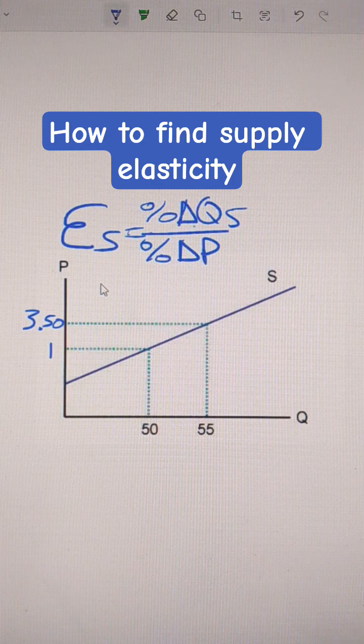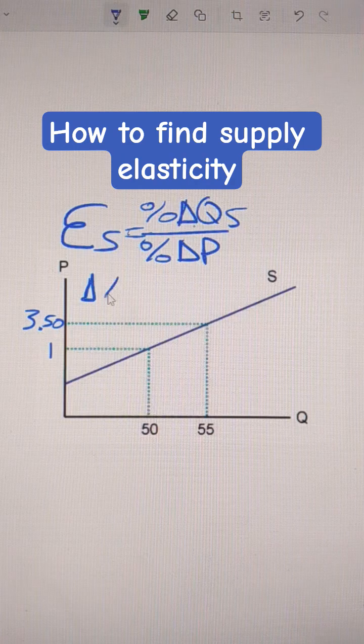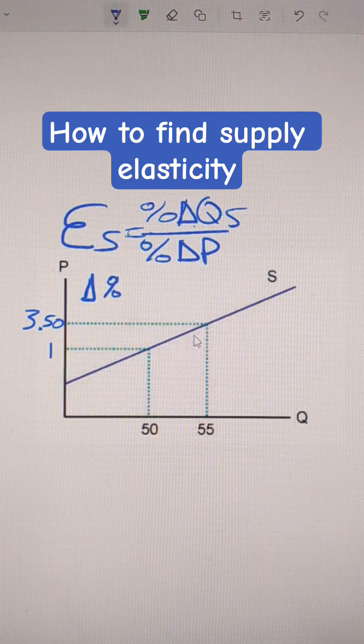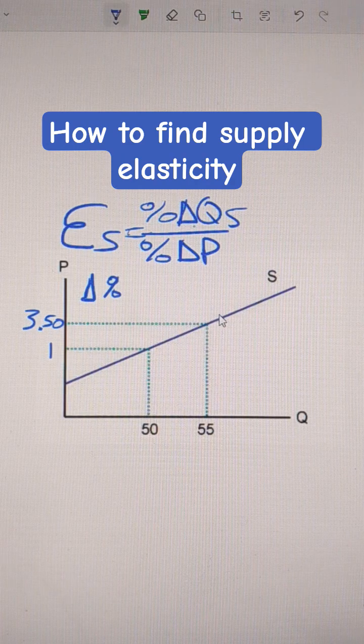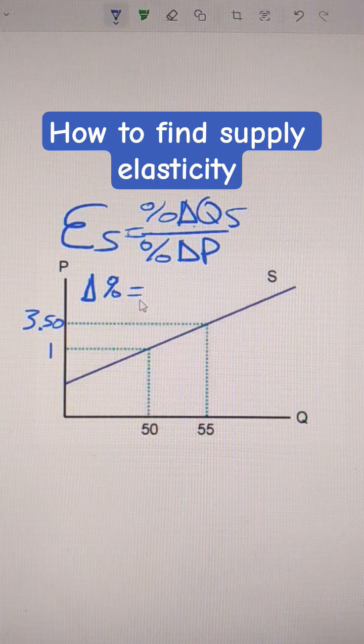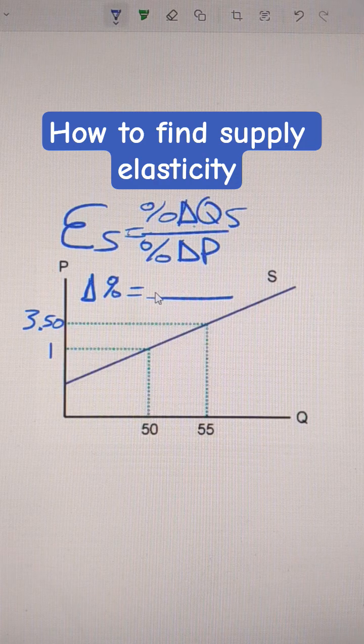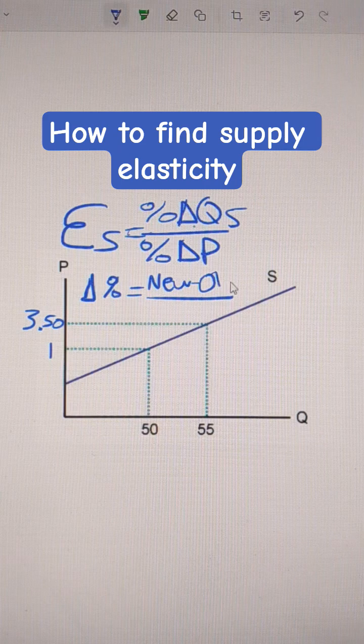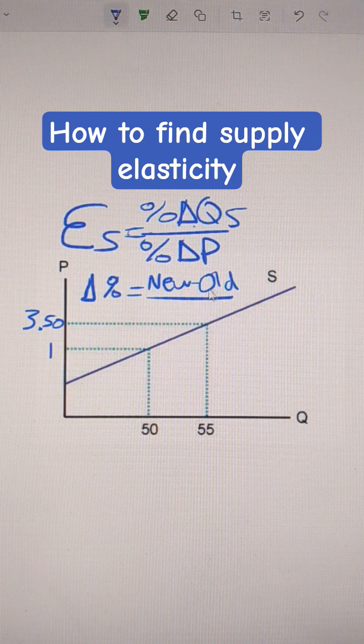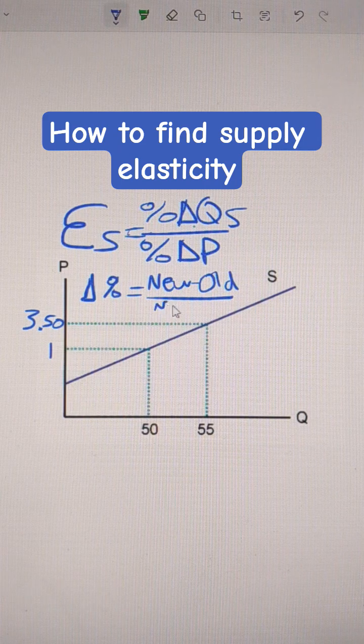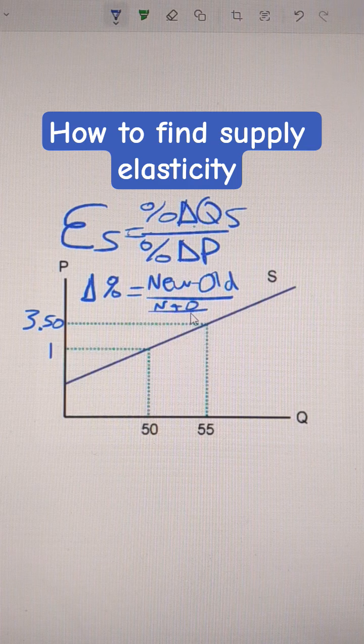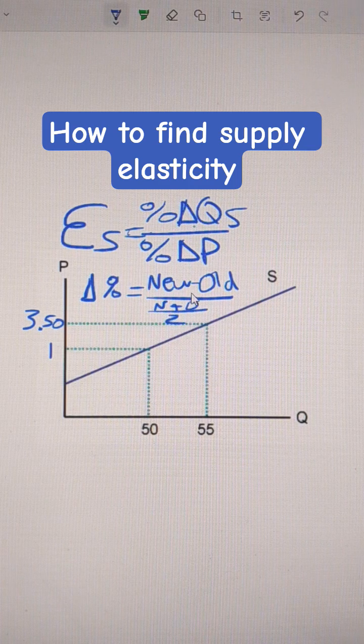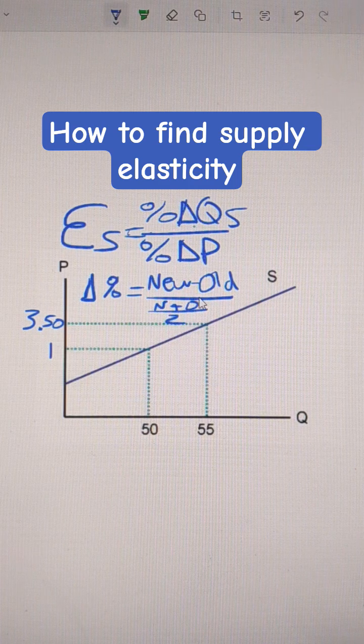Now, I recommend using the midpoint method. The midpoint method is a way of calculating percent change, so it doesn't matter whether you're going up or down the supply curve. The way to do this is new minus old over the averaging of both of them. So, I would put new plus old divided by 2. Or you could just look at the two numbers, what's halfway in between.